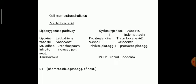The lipoxygenase pathway produces lipoxins and leukotrienes. Lipoxins are vasodilators, allow mononuclear cell adhesion, and inhibit neutrophil chemotaxis. Leukotrienes cause vasoconstriction, bronchospasm, and increased permeability. In the cyclooxygenase pathway, prostaglandins cause vasodilatation and inhibit platelet aggregation, while thromboxane A2 causes vasoconstriction and promotes platelet aggregation. PGE2 is responsible for vasodilatation and edema.